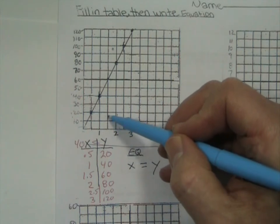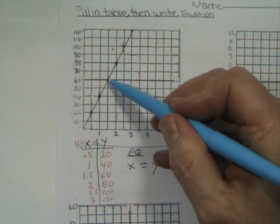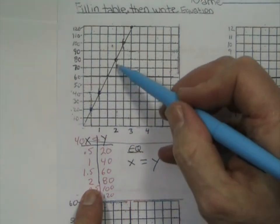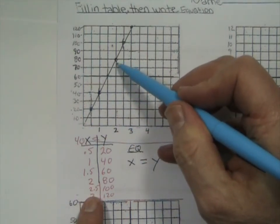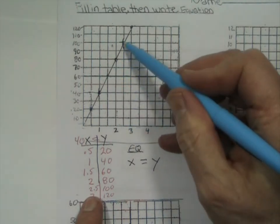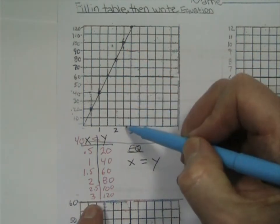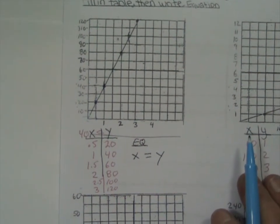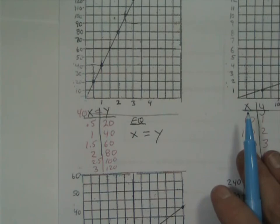Then we have 1, 40, then we have one and a half, 60, and then we have 2, 80, and then two and a half, 100, and then we have 3, 120. Those are our points that are on the line.